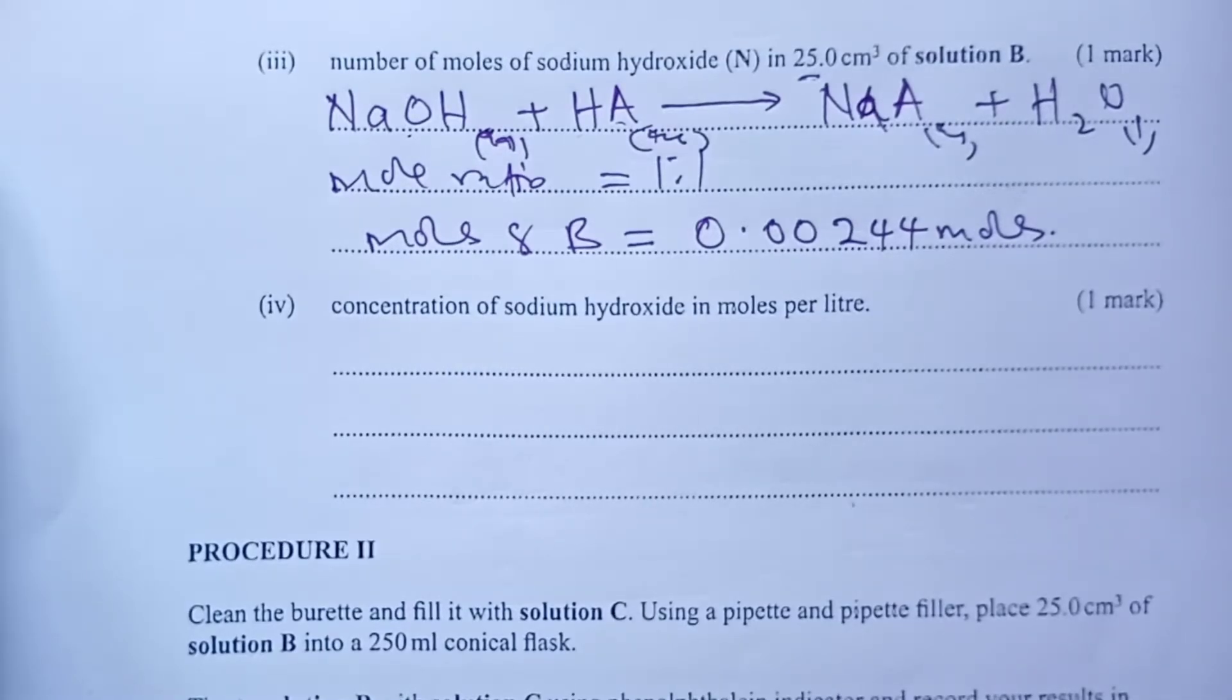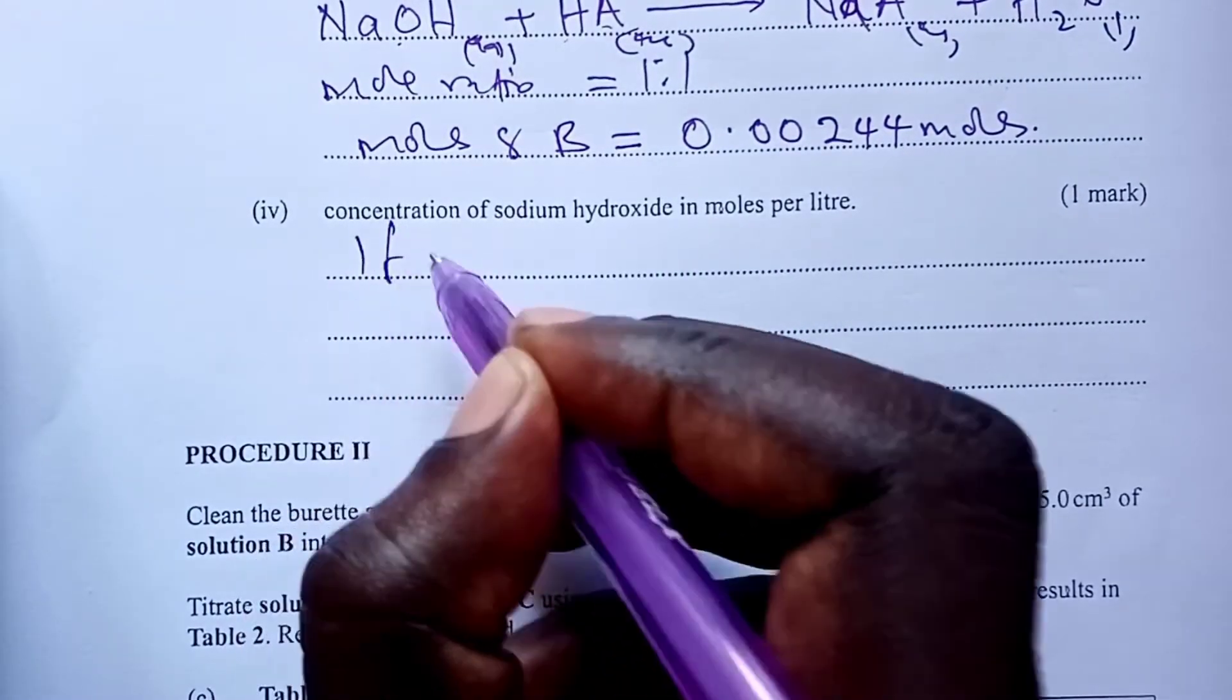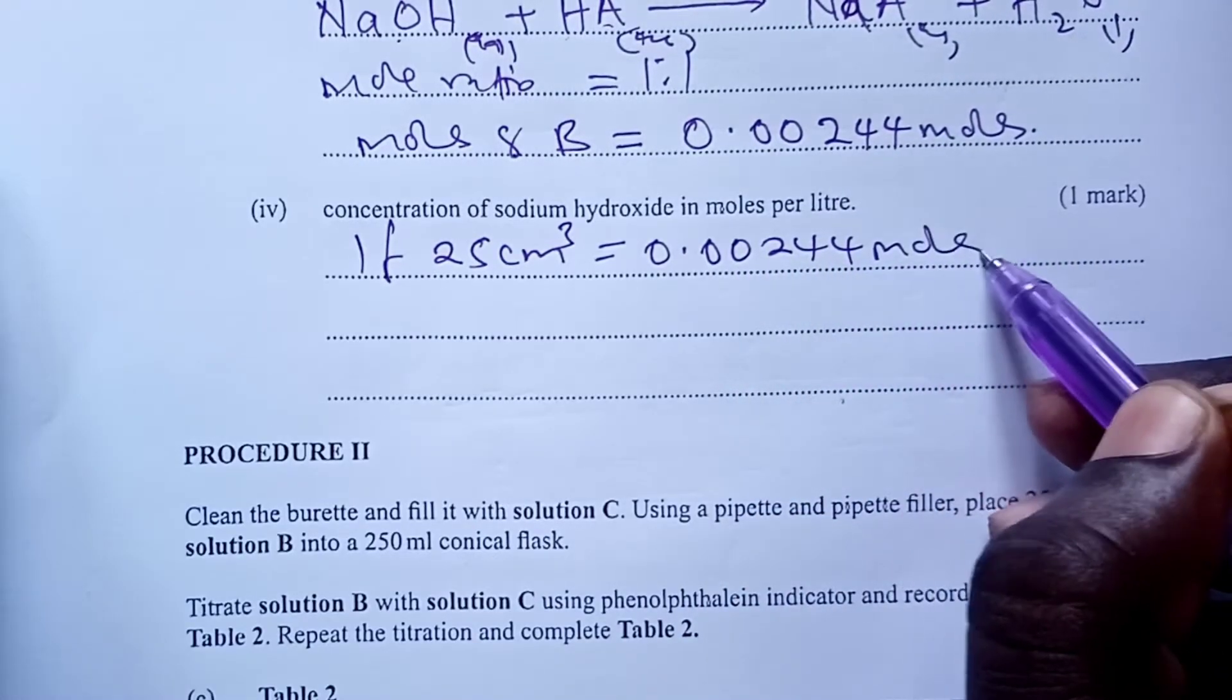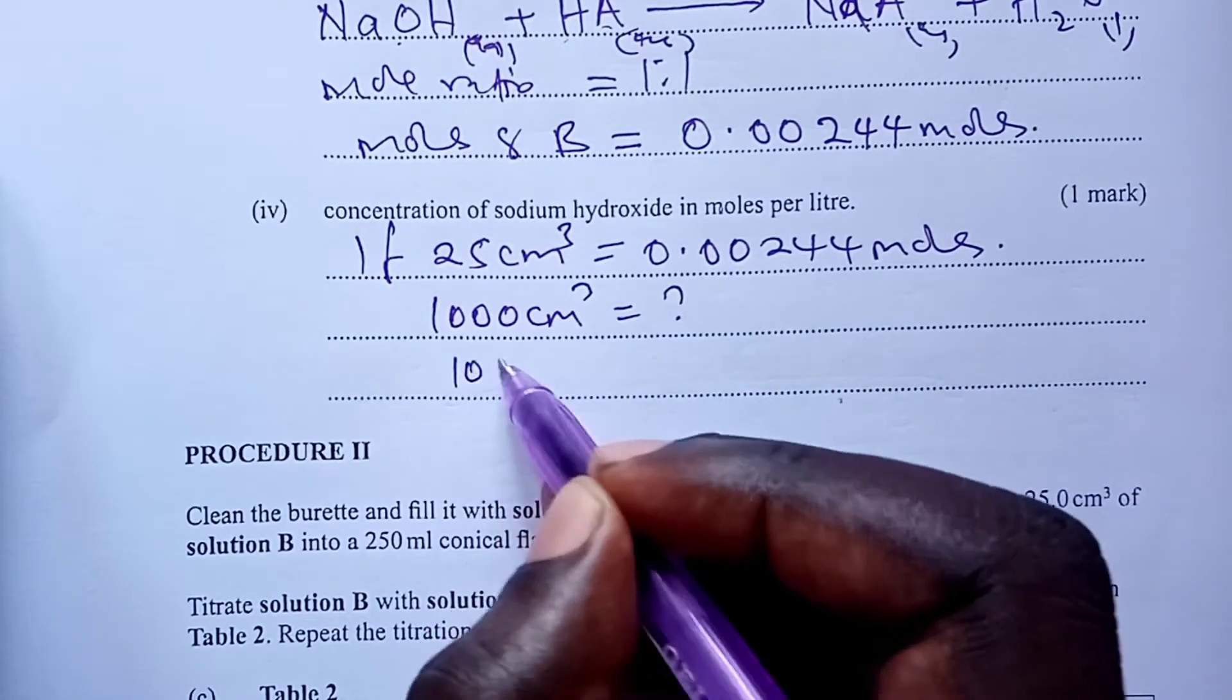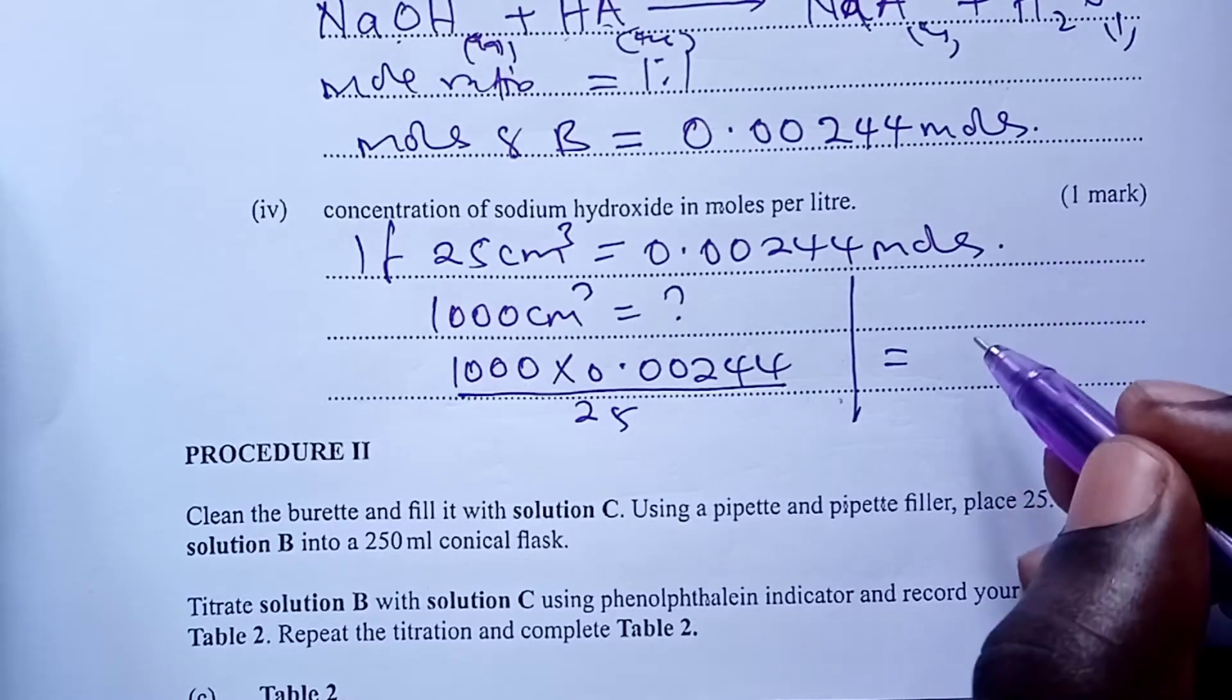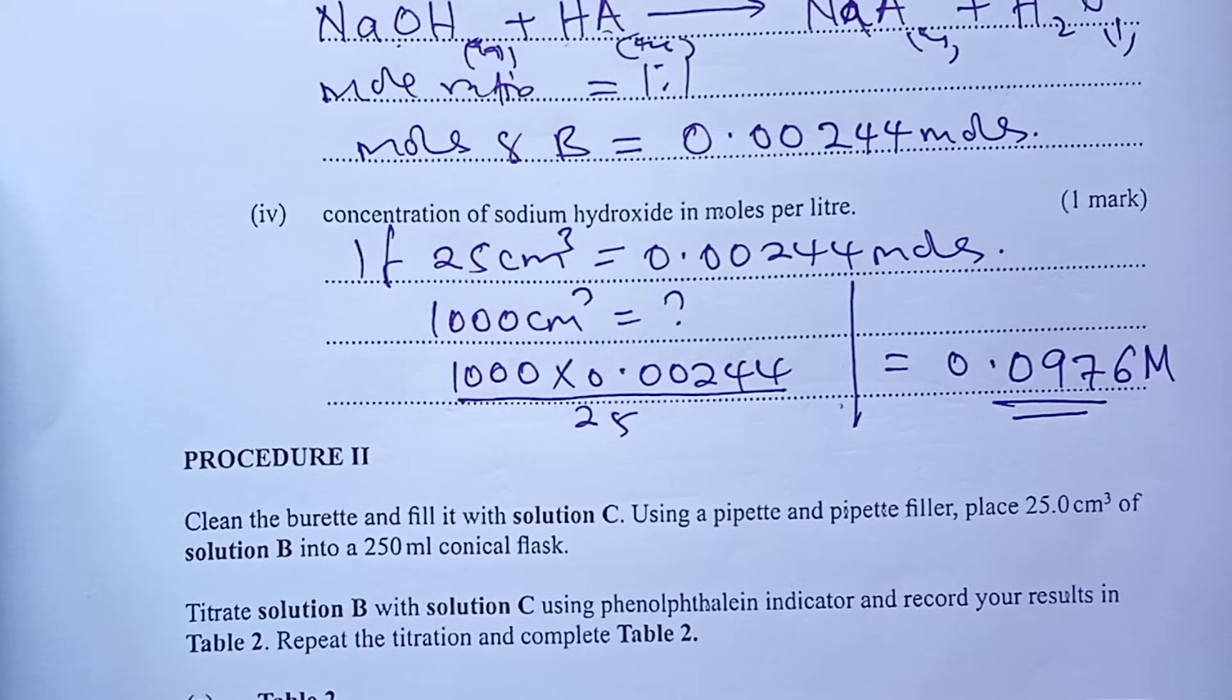We end procedure 1 by having a look at question part 4, concentration of sodium hydroxide in moles per liter. So if you remember, we used 25 cubic centimeters of sodium hydroxide in our titration. So in 25, that is where we had the number of moles indicated here. So moles per liter, you would ask yourself how many moles therefore would be present in one liter. Simple cross multiplication gives 1000 times 0.00244 divided by 25. And I get 0.0976 molar solution of sodium hydroxide. First principle approach, doing wonders as far as these questions are concerned.